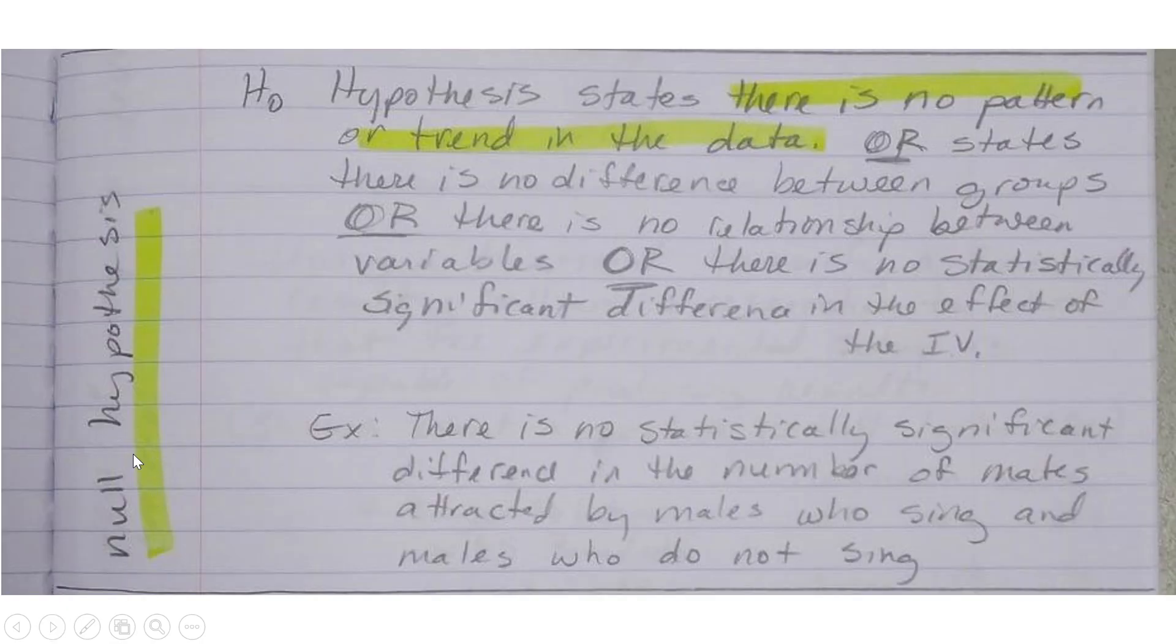The Null Hypothesis is written capital H with a little subscript zero. This hypothesis states that there is no pattern or trend in the data, or it states there's no difference between the groups, or there is no relationship between the variables, or there's no statistically significant difference in the effect of the independent variable. It depends on what the experiment is about, but basically it's saying that there's no difference in your data.